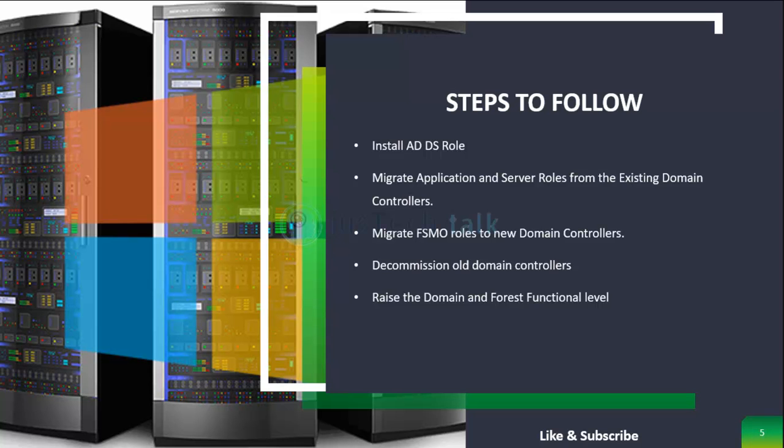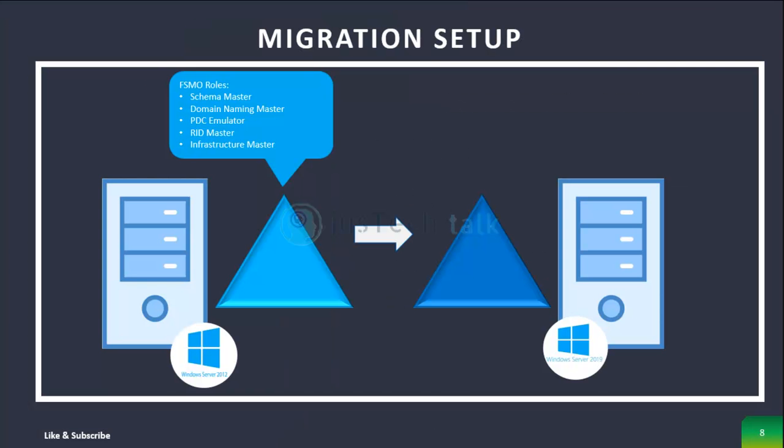The steps we'll follow during migration: first, install the Active Directory Domain Services role; then migrate application and server roles from the existing domain controller; migrate FSMO roles to the new domain controller; and finally decommission the old domain controller. I'm not going to do the decommission today, but we will raise the domain and forest functional level. To demonstrate this, I have Server 2012 R2 with all FSMO roles installed, and Server 2019 prepared to receive them.